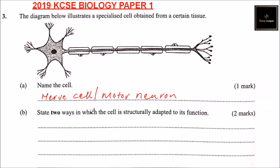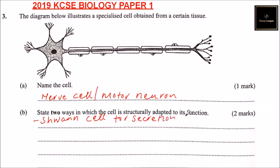Part B: State two ways in which the cell is structurally adapted to its function. One of the adaptations is Schwann cells for the secretion of the myelin sheath.